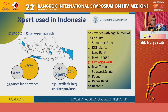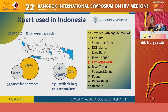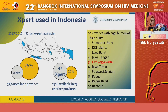In terms of GeneXpert use in Indonesia, as mentioned in this slide, in 2016 there were about 82 GeneXpert machines available, placed across 10 provinces considered high-burden for TB and HIV. In our province, Yogyakarta, which is ranked fifth in TB burden, we have about 8 GeneXpert machines.